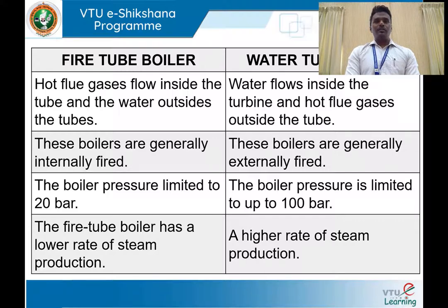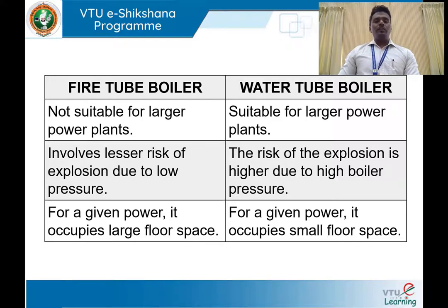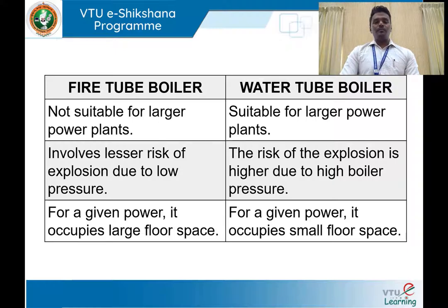In a fire tube boiler, since the tubes are housed inside the boiler shell, the shell thickness is less, which limits steam generation at very high pressure. Fire tube boilers also have lesser steam generation capacity. The water tube boiler, because of its excellent heat surface area, provides a higher rate of steam production. Fire tube boilers are used in industries like paper, sugar mills, and refineries, but cannot be used for electricity generation in a steam power plant. Water tube boilers can be used for larger power plants.